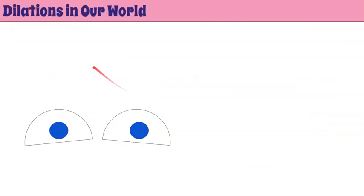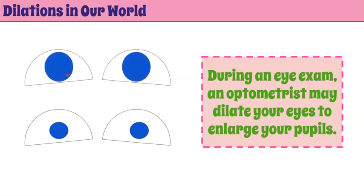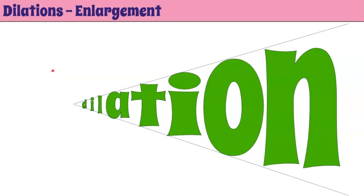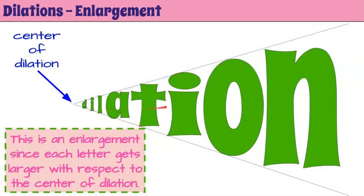Let's begin by understanding that dilations exist in our real world. Here are a pair of eyes. During an eye exam, an optometrist may dilate your eyes to enlarge your pupils — they enlarge that black pupil so they can better examine all the way back into your eye. So they're enlarging your pupil, and the word they use is dilate. In math, a dilation can be an enlargement, where each element gets bigger with respect to the center of dilation.